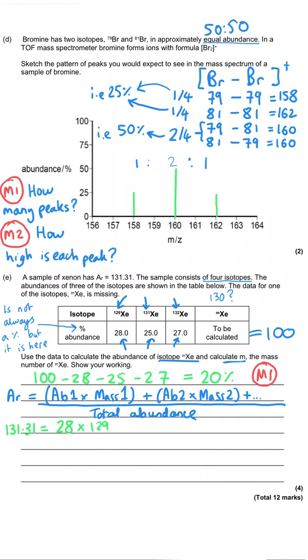So we substitute all of the other things in its place. So the first isotope has an abundance of 28 and a mass of 129. And the second one has an abundance of 25 and a mass of 131. And then we've got 27 times by 132. And then last of all, and the careful bit here, is 20% times by our unknown, which I'm just going to call X.